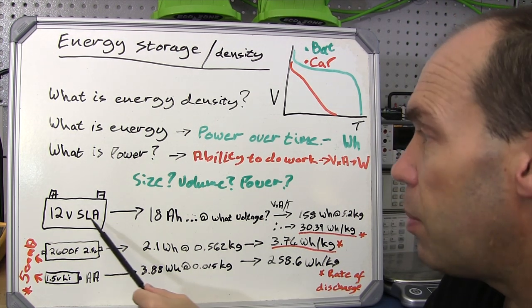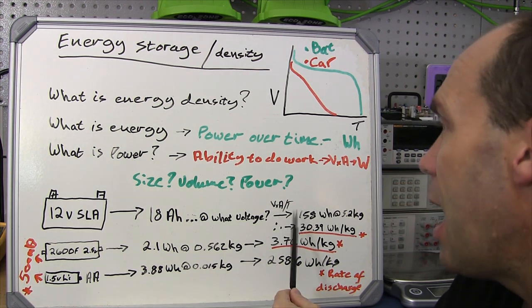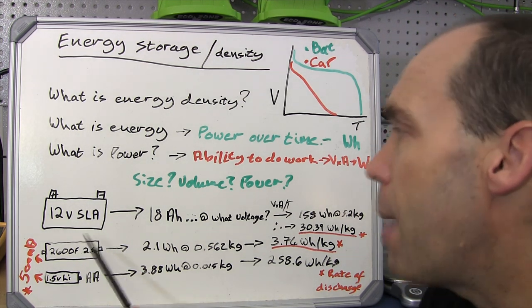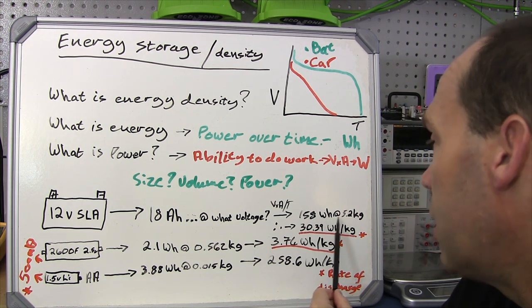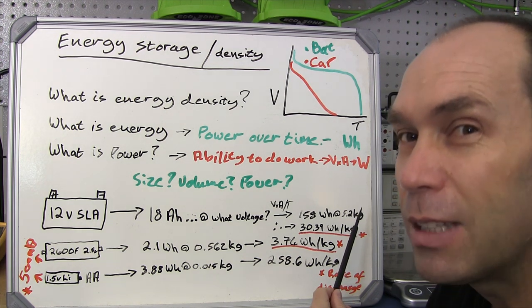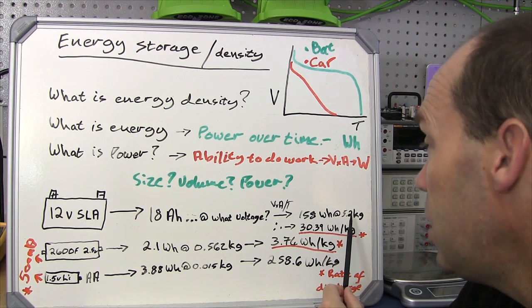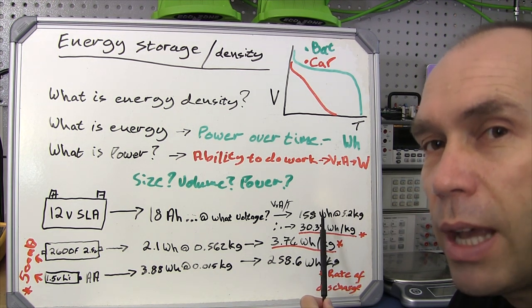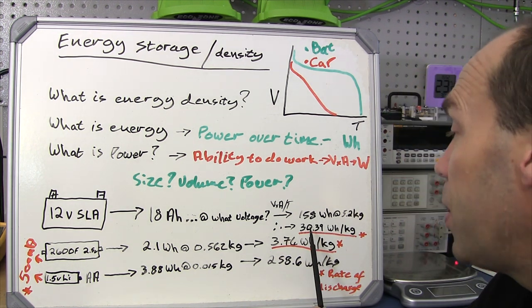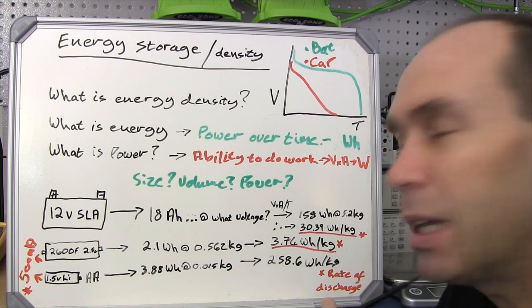Looking at this example in my spreadsheet — I discharged that battery at about 4 amps and it delivered 158 watt hours, and it weighed 5.2 kilograms. Once you've got its weight, you simply divide the watt hours by the weight and you come down to an energy density of 30.39 watt hours per kilogram. That's what we're trying to get to: watt hours per kilogram.